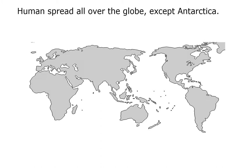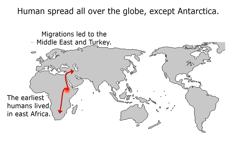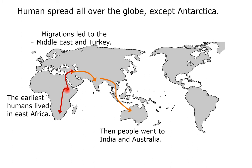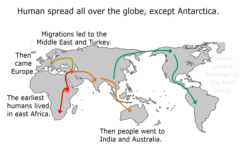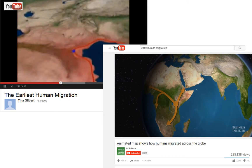Finally, human migration: humans spread all over the globe except Antarctica. The earliest humans lived in East Africa. Migrations led out of Africa to the Middle East and Turkey, then into India and Australia, then came Europe, and finally North and South America — the New World. Historians consider the Neolithic age to have ended when people began writing and using metal.